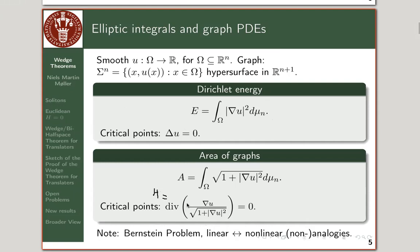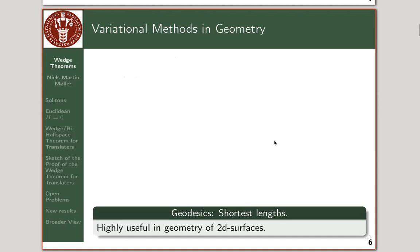The Bernstein problem says that at least in small dimensions, if you have a solution to the minimal graph equation defined on all of Rⁿ, then the function has to be linear. This is in contrast with the linear case: upstairs among harmonic functions, I can certainly find many entire harmonic functions which are not linear. So one has to be careful not to expect too strong an analogy between the two settings.